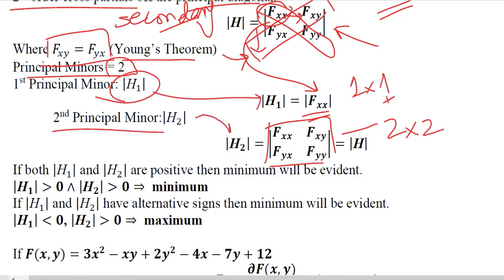For a minimum, both of the principal minors - |H_1| and |H_2| - should be positive. |H_1| should be positive as well as |H_2| should be positive. It will signify a minimum.